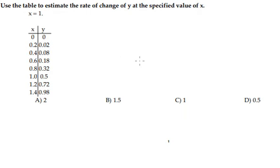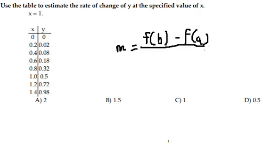Now I will show you how to answer. We have the formula here: m equals f of b minus f of a over b minus a.